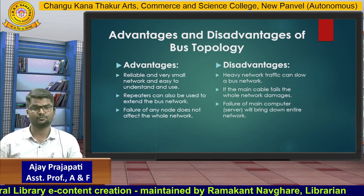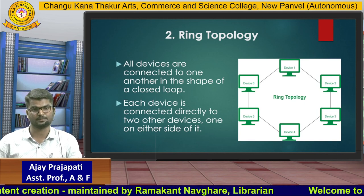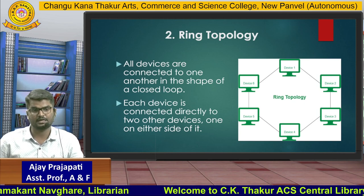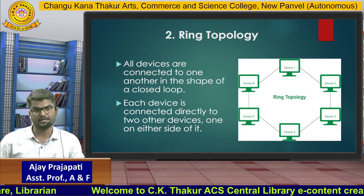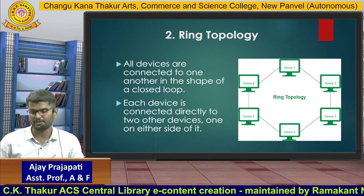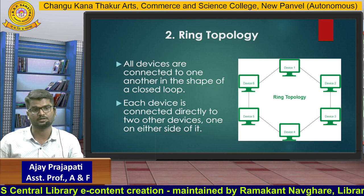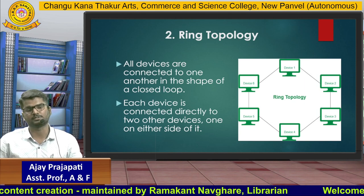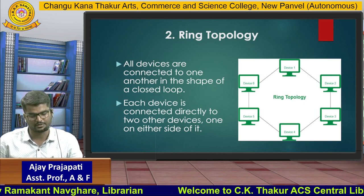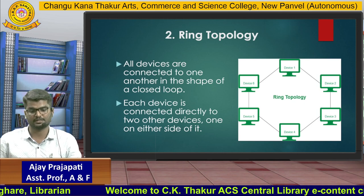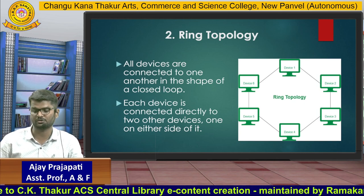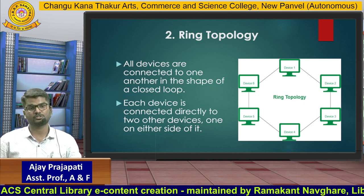Now we will move forward to the next topology, which is ring topology. All devices are connected to one another in the shape of a closed loop, as you can see in the diagram. Every device is connected through a cable — Device 1 to Device 2, Device 2 to Device 3, Device 3 to Device 4, and so on. Each device is connected directly to two other devices, one on either side of it, forming a ring.